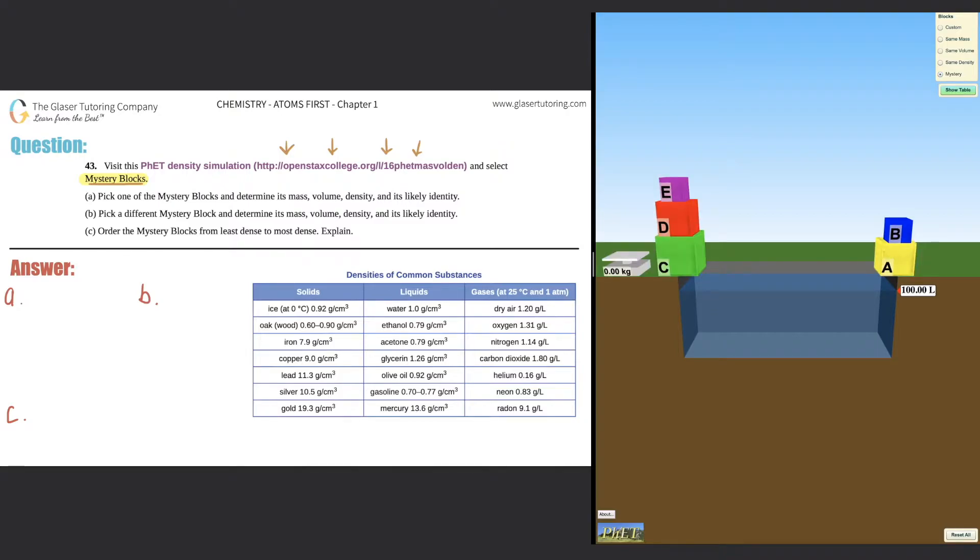And voila. All right. So we got five blocks, A, B, C, D, and E. And I guess with these, you got to figure out the mass, density, and the volume.